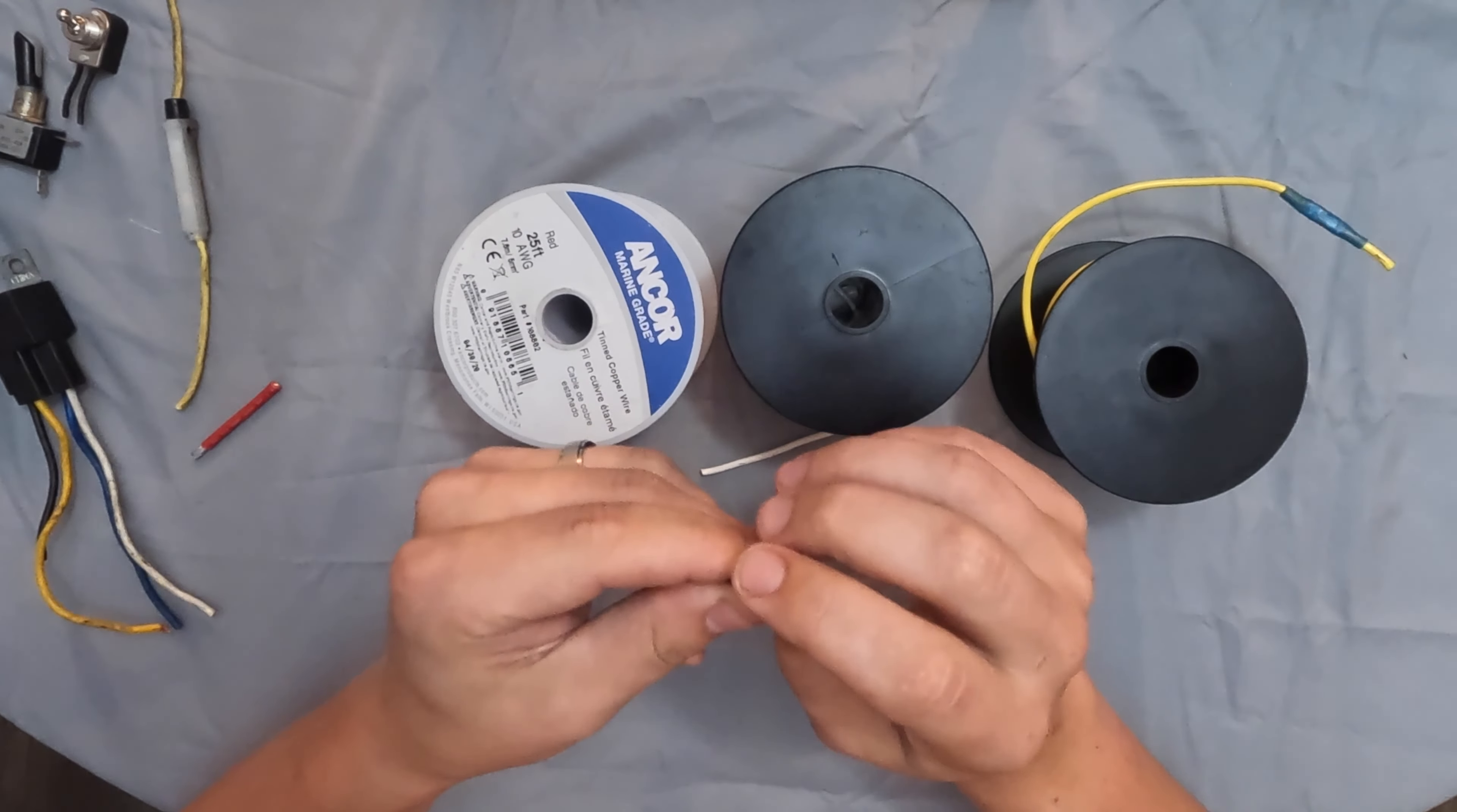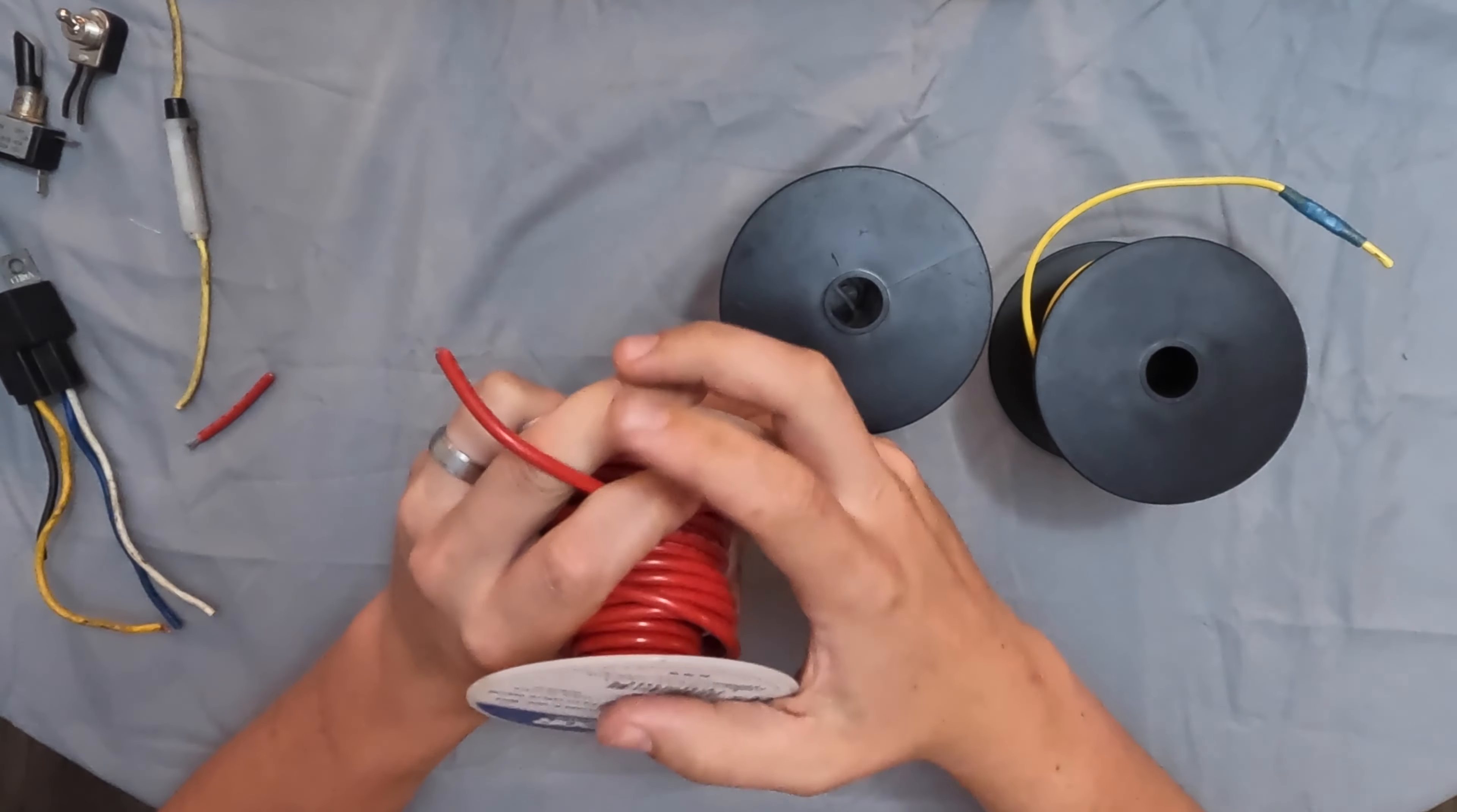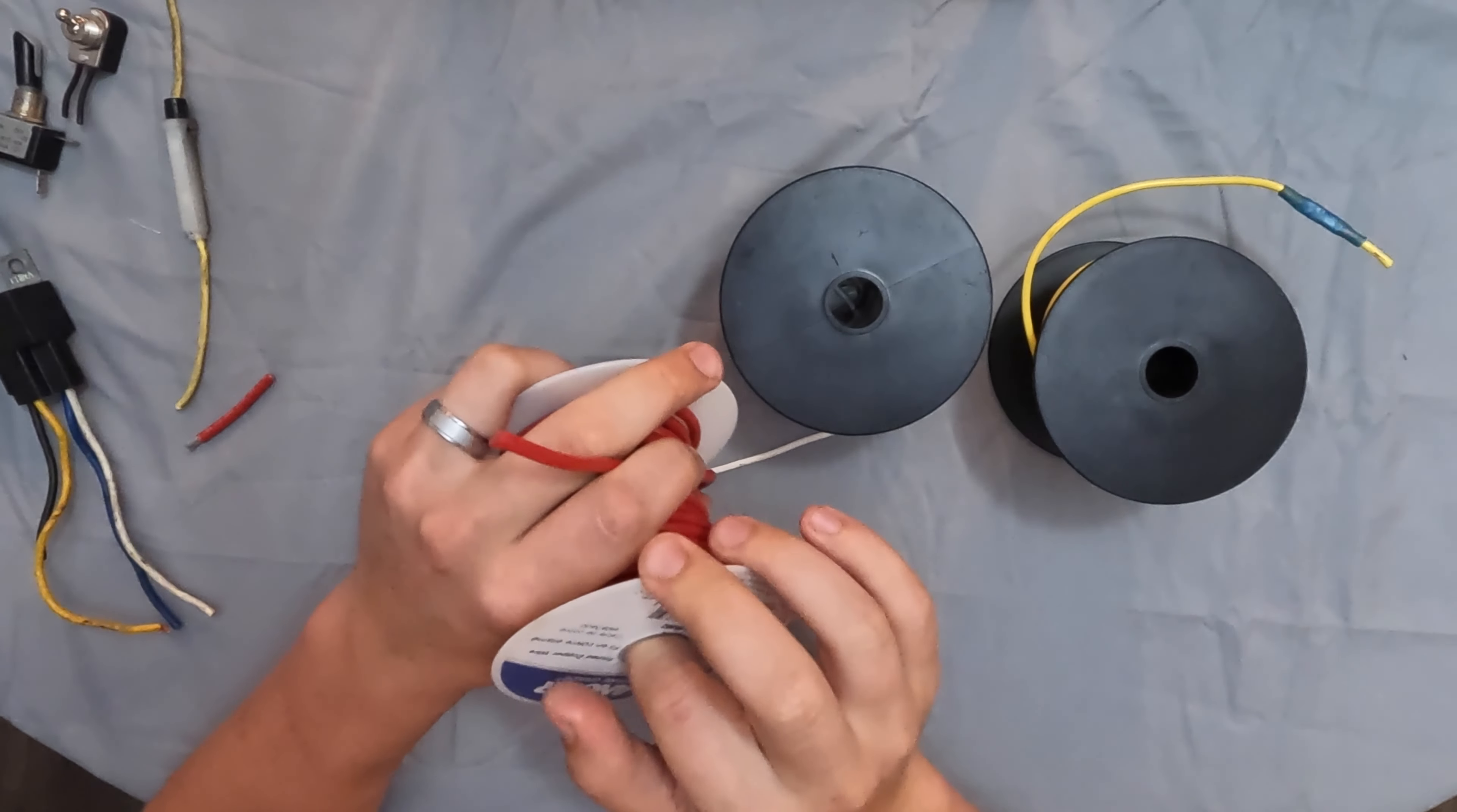Now this one over here is a marine grade wire and all it is, it's a copper wire, the oxygen free copper, but it's covered in tin on the outside of the copper and that prevents corrosion from the salt water.